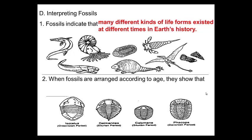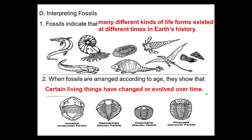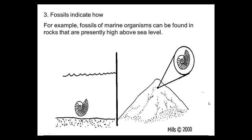Number two: when fossils are arranged according to age, as you see in this picture, you might see some similarities. They show that certain living things have changed or evolved over time. Fossils also indicate how the Earth's surface has changed — that uplifting I talked about before. For example, fossils of marine organisms found deep underwater are presently high up in the mountains because this land was uplifted, moved up.